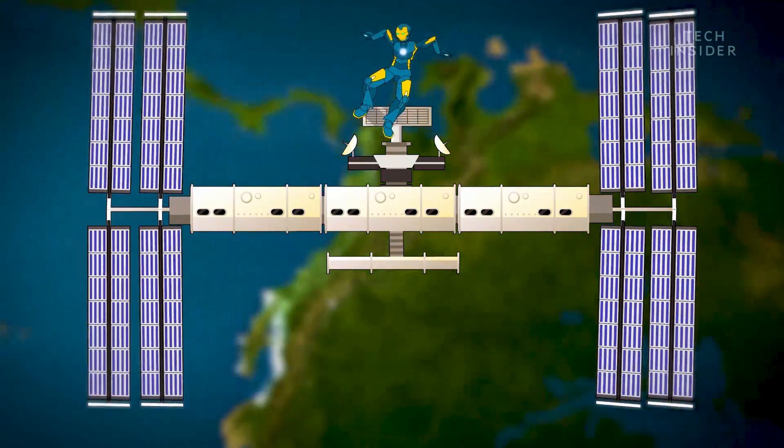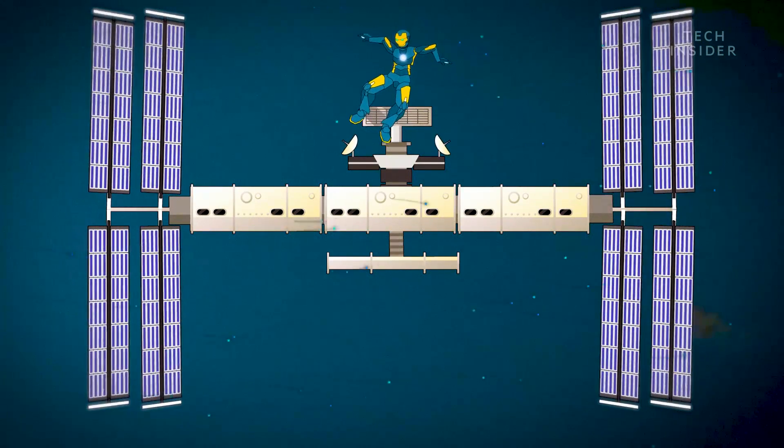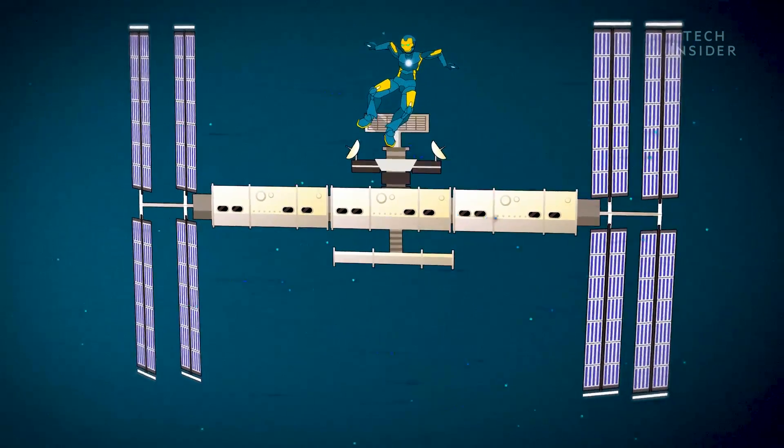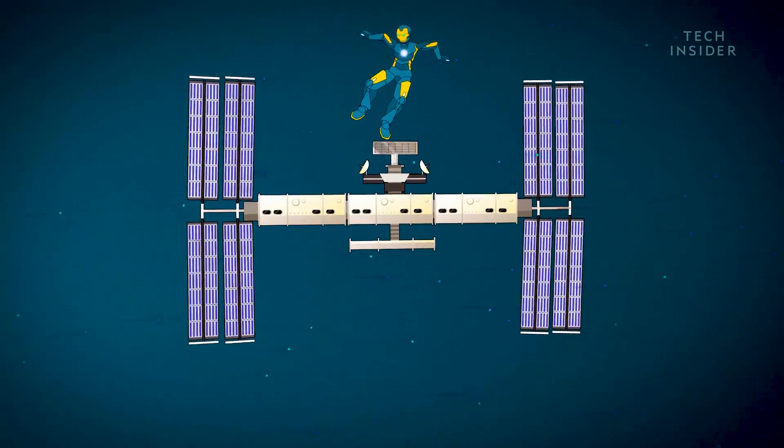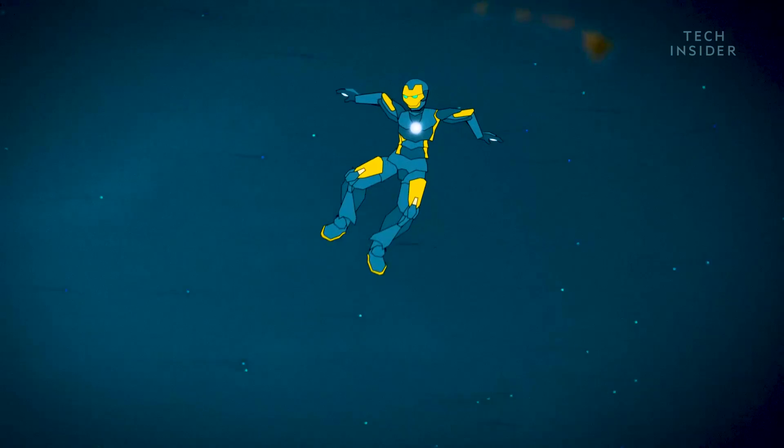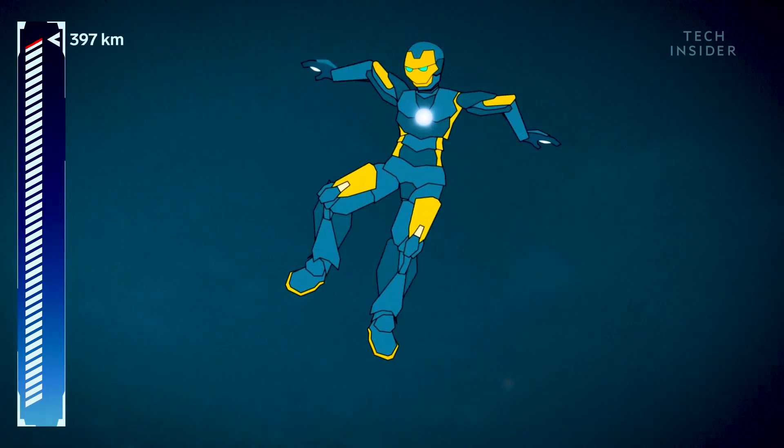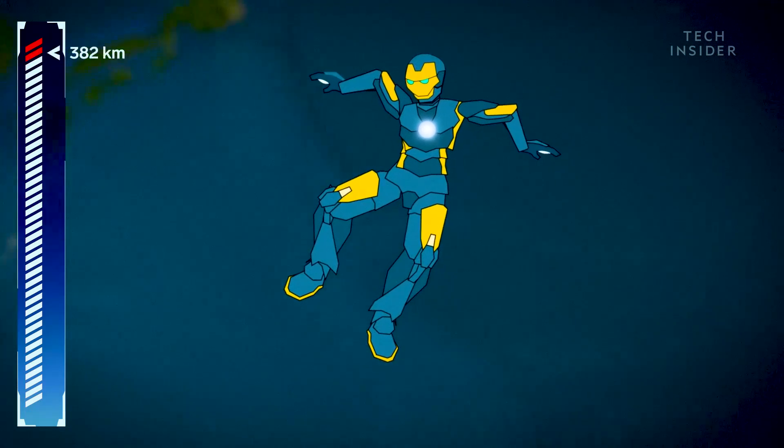Now, even though it's so high up, the ISS is pushing through a very thin atmosphere. So that friction against the atmosphere slows it down. So the station fires engines to maintain speed and keep from crashing into the Earth. But sadly, your super suit doesn't come with engines strapped to your feet. This has two consequences.